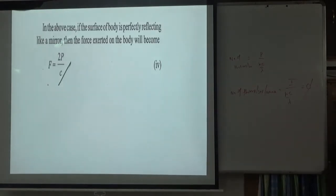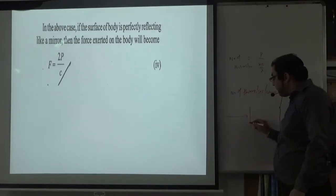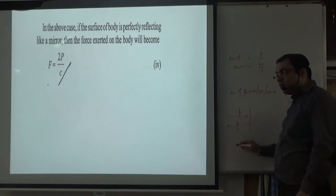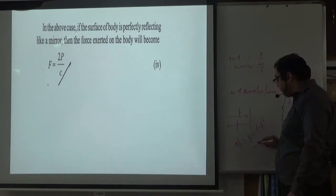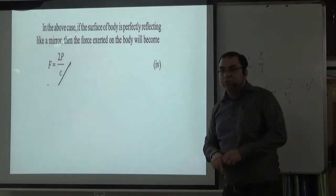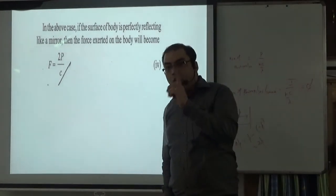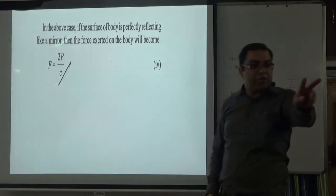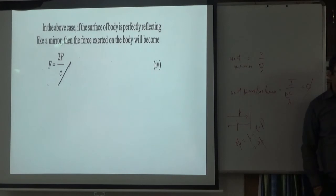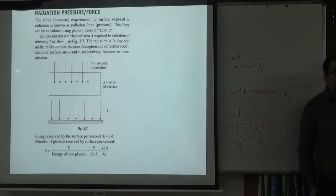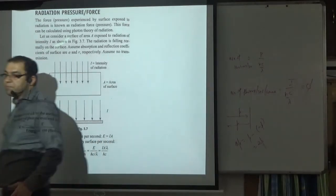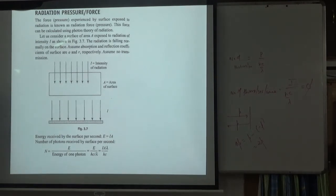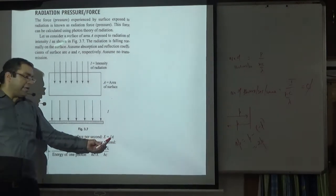Remember: force equals P/c. If light reflects and comes back with momentum p, the change in momentum is p minus (−p) = 2p, so force is doubled. If light is fully absorbed, F = P/c. If fully reflected, F = 2P/c. For radiation pressure, divide force by area. Intensity I equals energy per second per unit area, so radiation pressure for absorption is I/c.